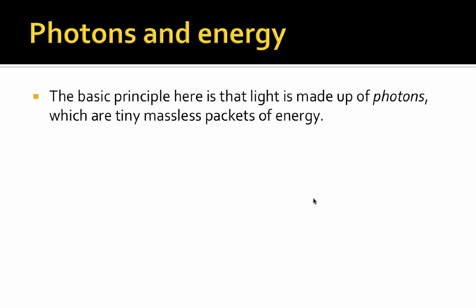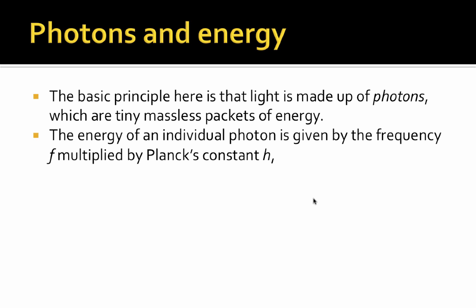The basic principle has to do with photons and energy. Light is made up of photons, which are tiny massless packets of energy. The energy of an individual photon is given by hf, in other words, it's the frequency f multiplied by Planck's constant h. So each photon has an energy hf.